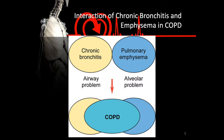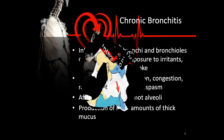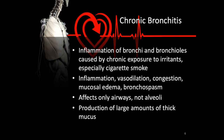Unlike pulmonary emphysema, chronic bronchitis is an inflammation of the airways leading to the alveoli, affecting the bronchi and bronchioles. It is normally caused by chronic exposure to irritants, especially cigarette smoke. It is manifested by inflammation, vasodilation, congestion, mucosal edema, and bronchospasm. It affects only the airways and not the alveoli, and is responsible for the production of large amounts of thick mucus — which will be important when we discuss interventions and the patient's ability to drink fluids.